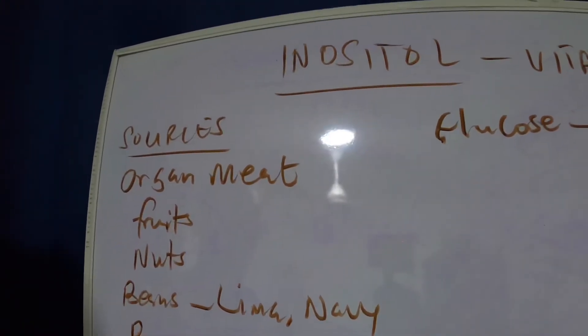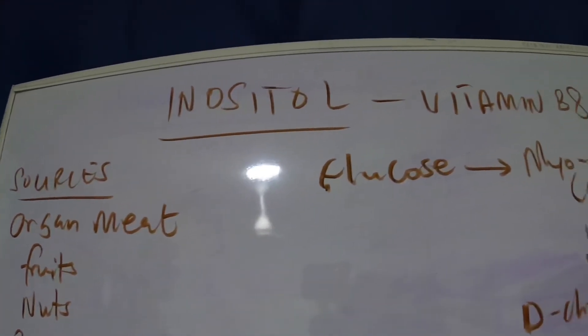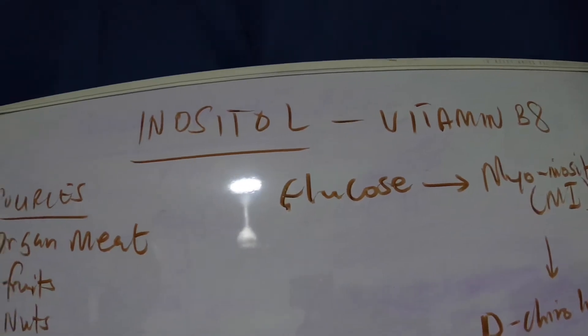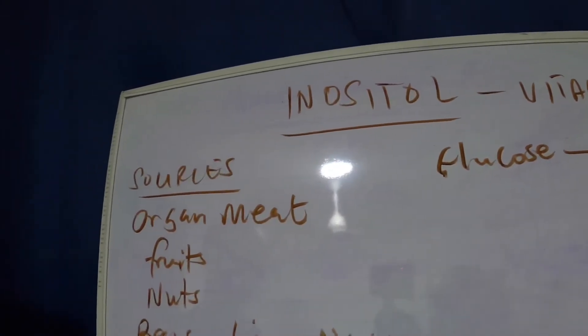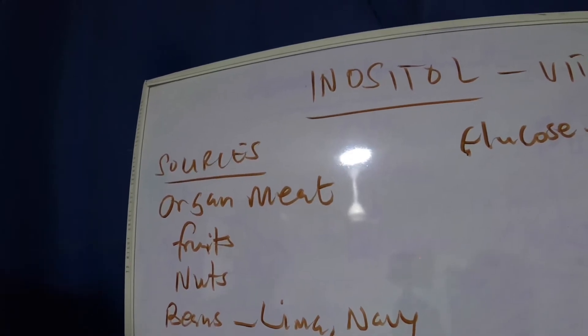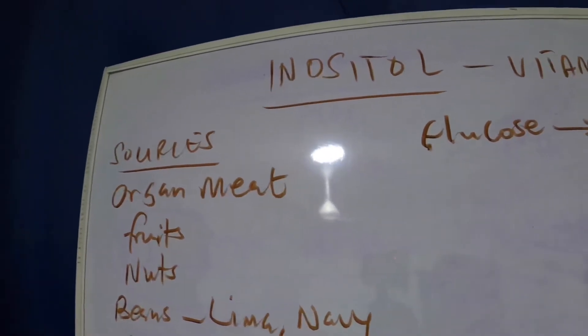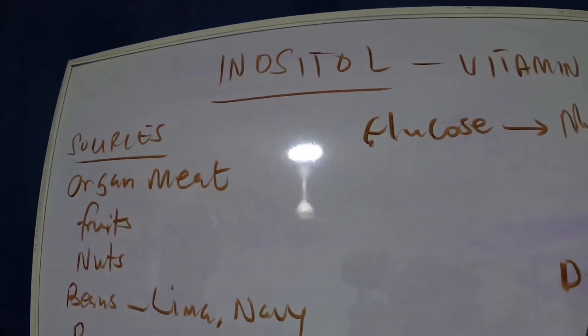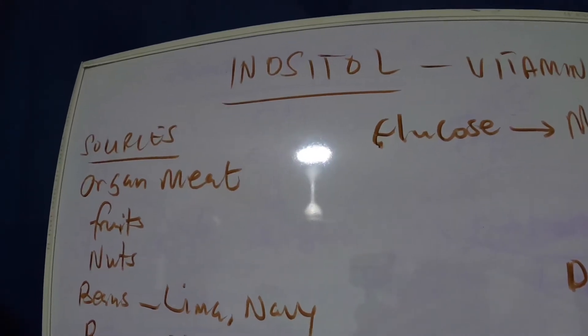Welcome, today we'll be talking about inositol, also known as vitamin B8. This compound has been shown to have some benefits for people with PCOS. Before we go into a deeper lecture, let's take a look at the sources of inositol, where you can get vitamin B8 from.